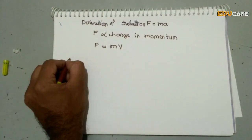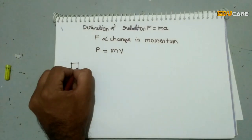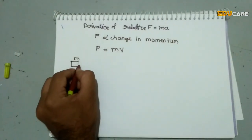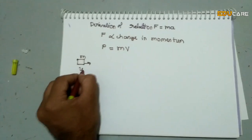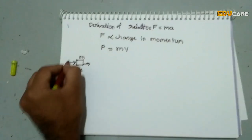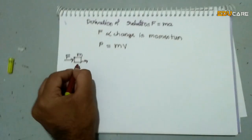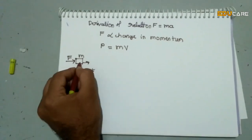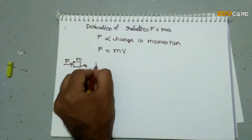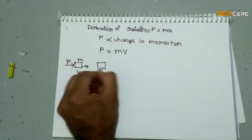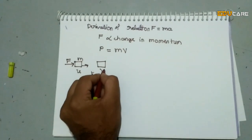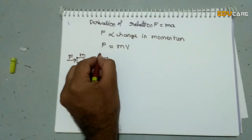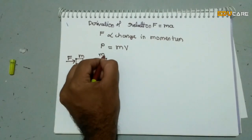Let us consider a body of mass m moving with initial velocity u. Then a force of magnitude f acts on the body for a time interval t. Then the velocity changes to v — that means velocity increases and mass remains the same.